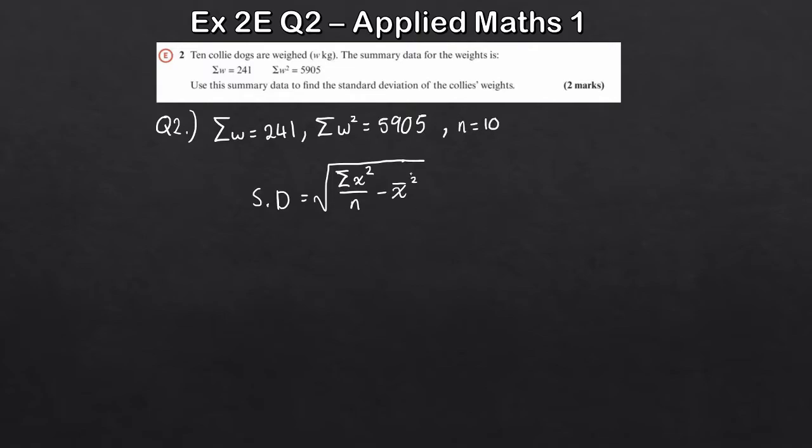Well, how do we get X bar? Remember, this is just the mean of the sample. And the mean of the sample here is just going to be the sum of W, 241, divided by N, where N is 10. So in this case, W bar will be 241 divided by 10. So all I'm going to do here is just plug all this in.